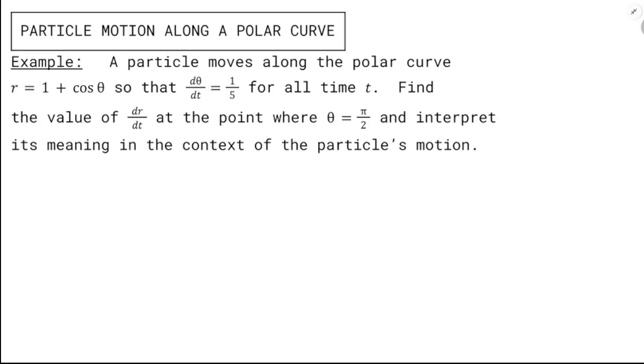We're just going to start with the equation, and we're going to take the derivative with respect to time. It's been a while since we've talked about implicit differentiation, but if you need to go back and look at that, that was in unit four. r is equal to 1 plus cosine θ, and so I'm going to take the derivative of both sides of this equation with respect to t.